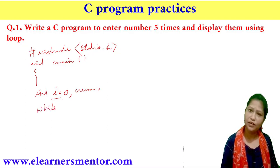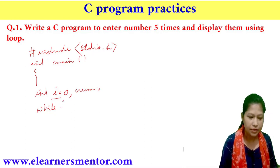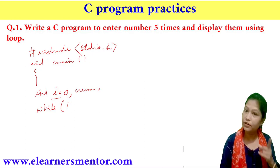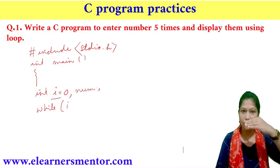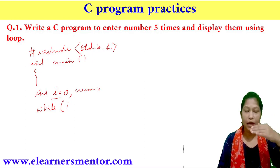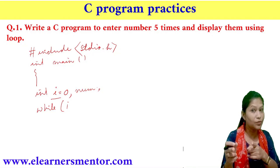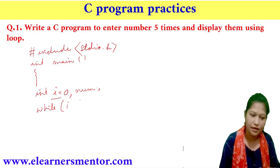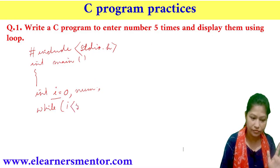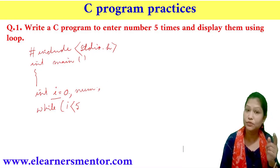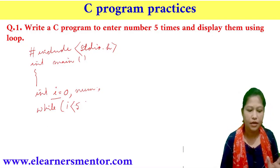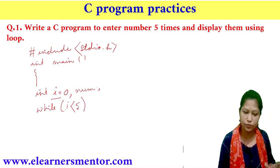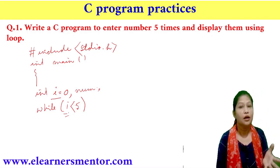We will use a while loop. The counter variable i starts at 0. The condition is i less than 5. i should be initialized before the loop starts. If i is not initialized, there will be an error.